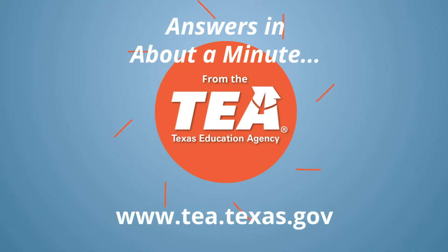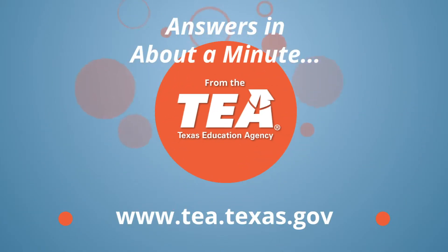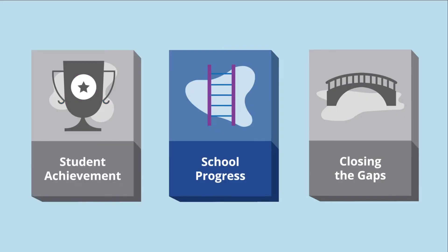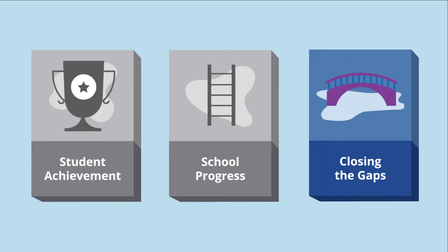Answers in about a minute from the Texas Education Agency: Can you explain how the Closing the Gaps domain works? In the new accountability system, schools are given an overall rating based on performance in three different domains: student achievement, school progress, and closing the gaps.